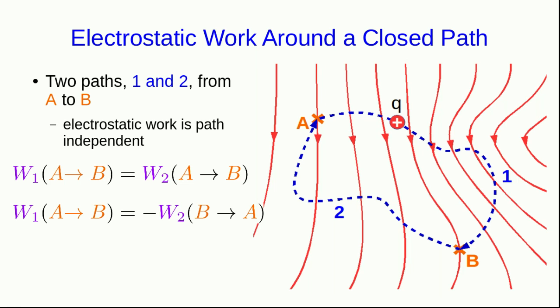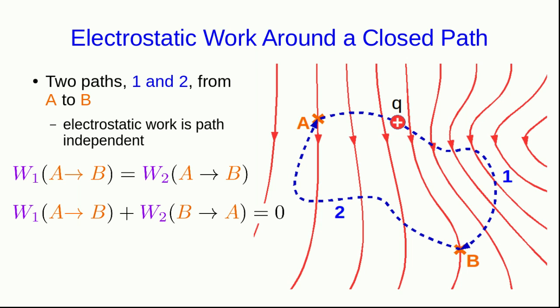Note that that means that the work along path one is the negative of the work along path two if we go in reverse from B to A. Notice that from A to B along one and then B to A along two is a closed path. And so what we have is that the sum of these two works around the closed paths is zero. But this is totally general. This is just something that's happened because we know that electrostatic work is path independent. And so it must always be true for any points that form a closed path. The electrostatic work around any closed path has to be zero.